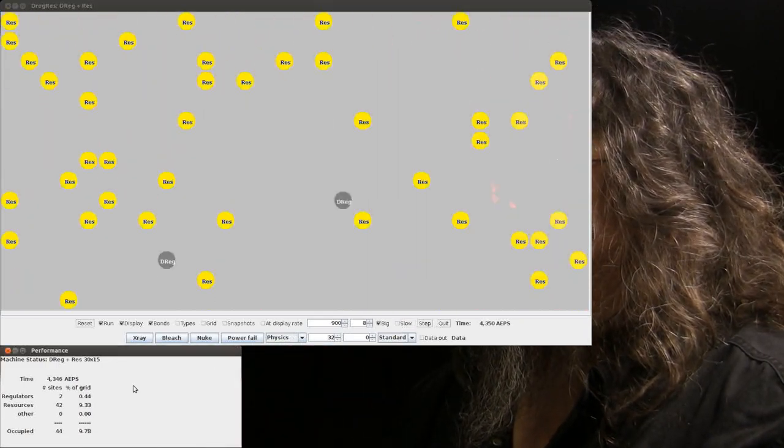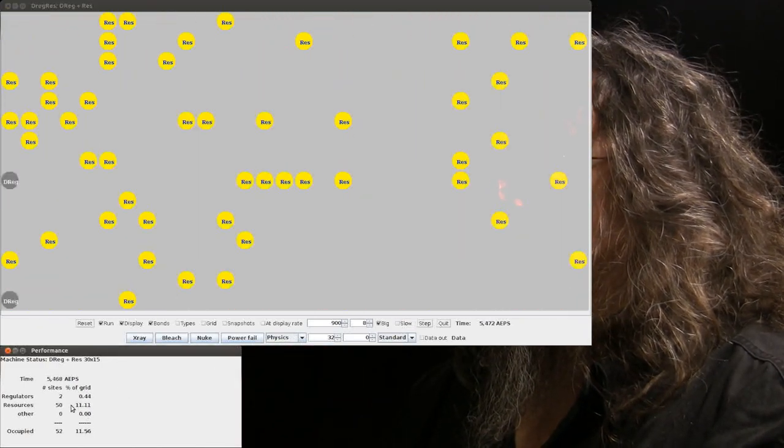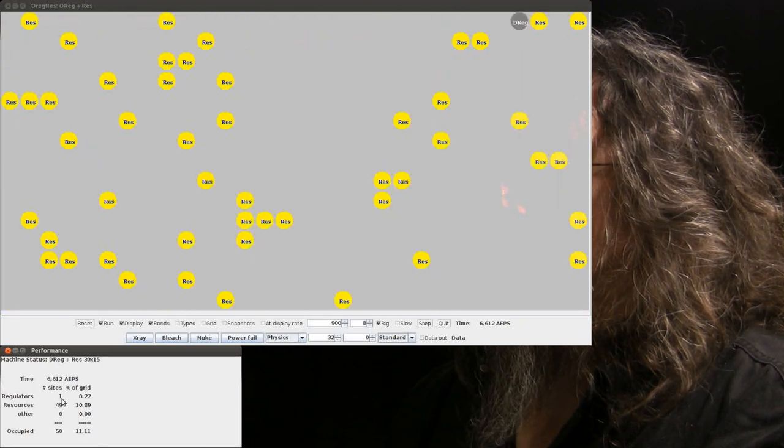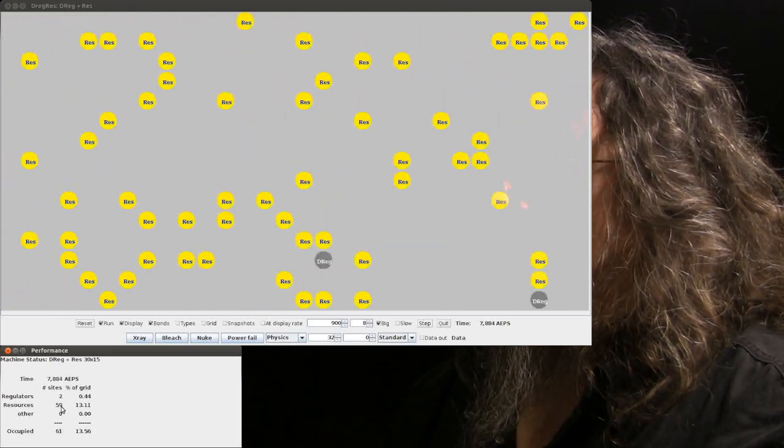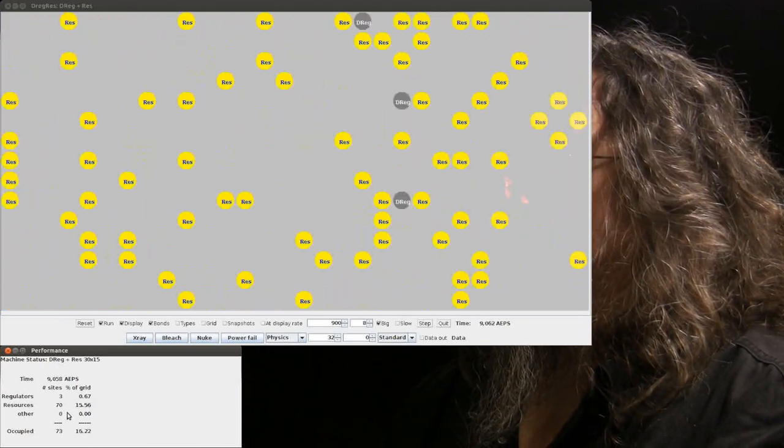And you see what starts to happen. If you can read these numbers over here, there's currently two, one, one. There's 50 res, 60 res, and so on.